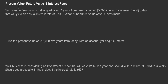Present value is the amount of money today that, given an interest rate, would be needed to produce some amount of money in the future. And if that's what present value is, then future value is the exact opposite — it's a certain amount of money in the future that an amount today would yield, given a certain interest rate.